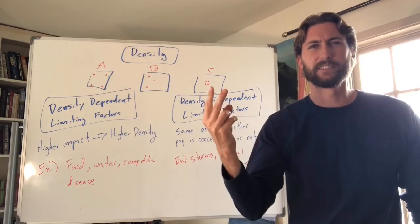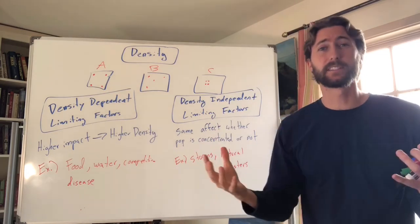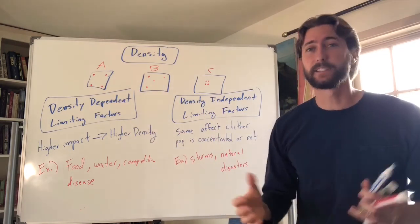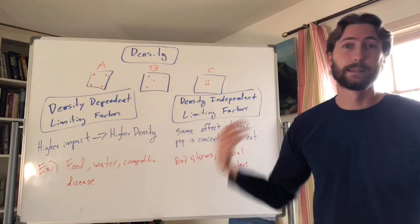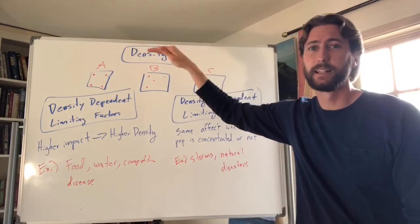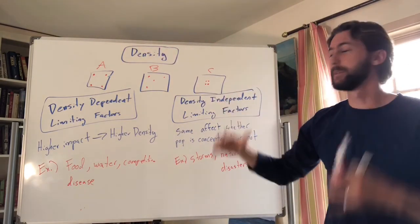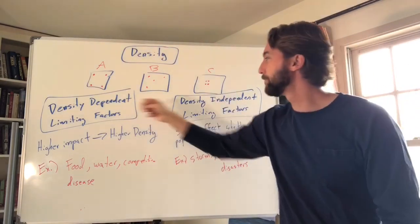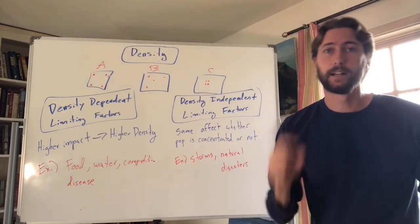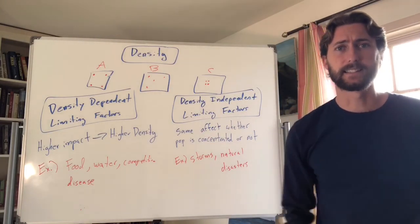All right, that was a lot — hopefully it helped! Remember we talked about biotic and abiotic factors, biodiversity, limiting factors, and carrying capacity. Carrying capacity is the limit; limiting factors set that limit. We also covered density dependent and density independent limiting factors. Hope that was helpful — work hard, get smart, see you guys next time!